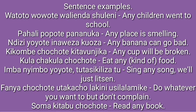Fanya chochote utakalo, lakini usilalamike — do whatever you want to do, but don't complain. Soma kitabu chochote — read any book. The prefix is placed before and after where the hyphens are — all the places where the hyphens are. For example, adding 'cho' gives you 'chochote,' and 'yo' gives you 'yoyote.' You can comment sentences you have formed below and we can check and correct them together.